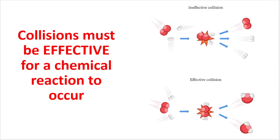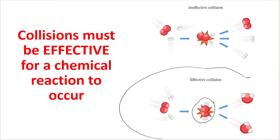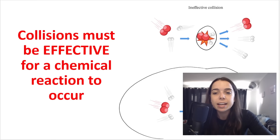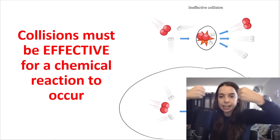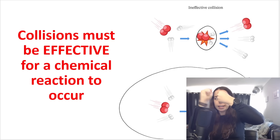We need effective collisions for a chemical reaction to occur. In this second diagram, you can see different atoms or molecules colliding with each other. They change their orientation with which they collided — so maybe instead of colliding like this, they collided like this.